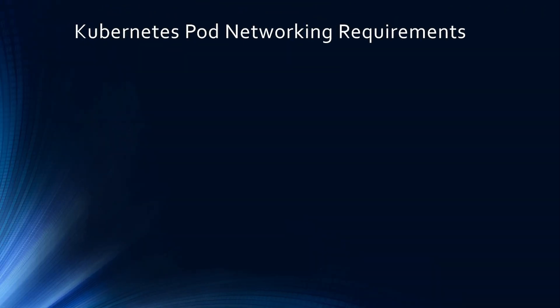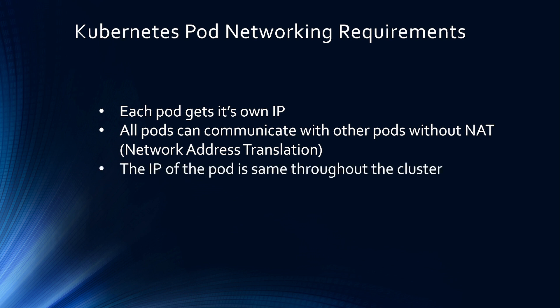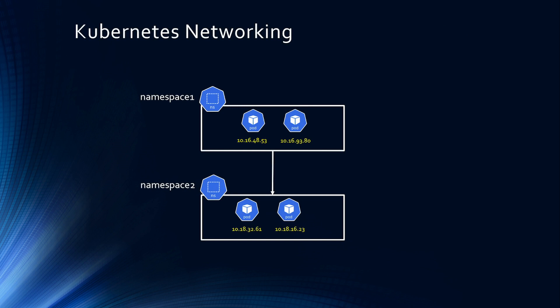Let's start with Kubernetes pod networking requirements. Each pod gets its own IP address, and all pods can communicate with other pods without any network address translation. What this means is the IP address of the pod is the same throughout the cluster, even if two pods are running in two different worker nodes.